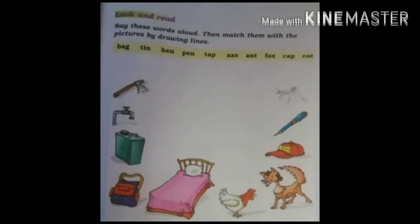Now on page number 33, say these words aloud given here: bag, tin, hen, pen, tap, eggs, and fox, cap, cot. Now what you have to do: